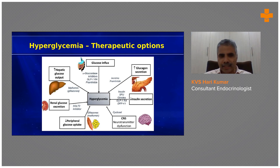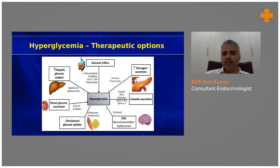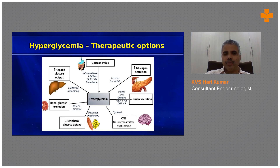Hyperglycemia management is based on pathophysiology. Reduced insulin secretion from beta cells can be addressed with insulin or insulin-releasing drugs such as sulfonylureas, glinides, DPP4 inhibitors, or GLP-1 receptor agonists. Alpha-glucosidase inhibitors reduce glucose absorption from the gut. Metformin increases peripheral glucose uptake. SGLT2 inhibitors prevent glucose reabsorption from the kidney, and glitazones act as peripheral insulin sensitizers.